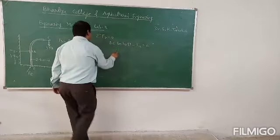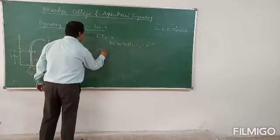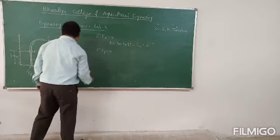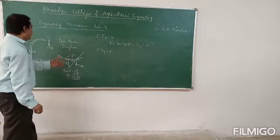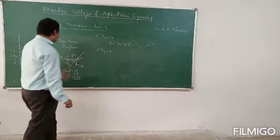And summation of Fy equal to 0. This is RB sine 36.87...